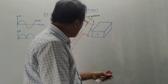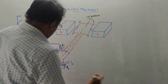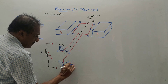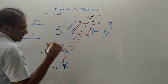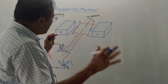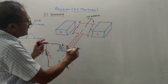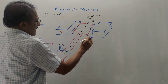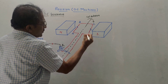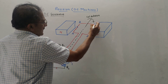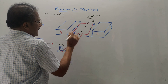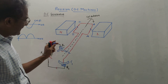During the next rotation, the positions of commutators are interchanged — this will become C2 and this will become C1 — whereas brushes remain as they are. Only positions of commutators are changed. Due to rotation, the position of coil is also changed, so this becomes A, B, C, D.